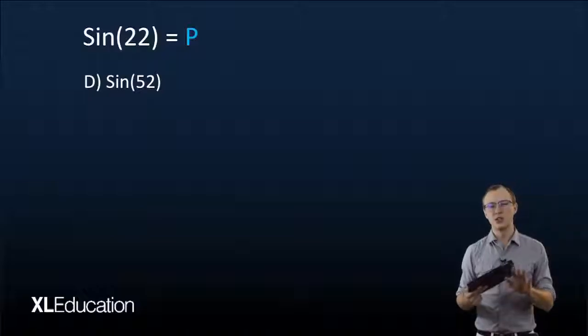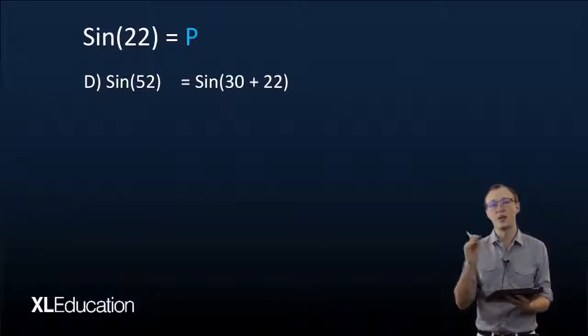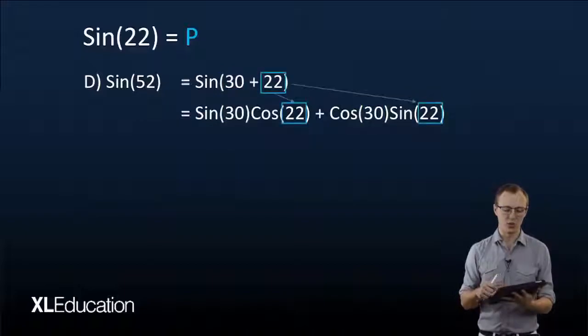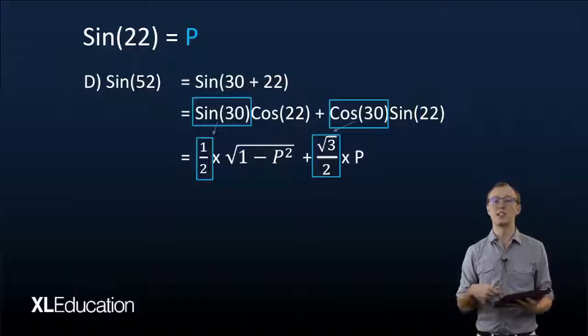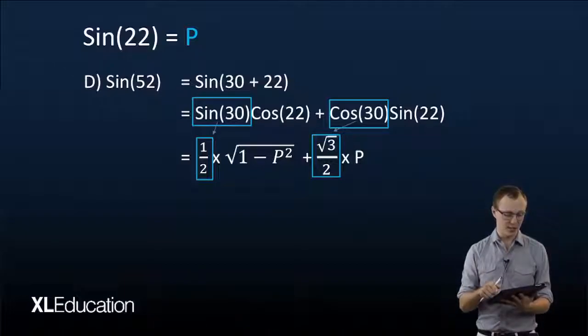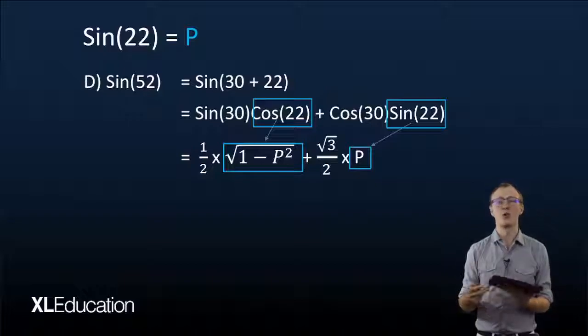For sine of 52°, this is a compound angle question — you have to play around with your special angles and the angle you've been given. Sine of 52° equals sine of (30° + 22°). Using the compound angle formula, that becomes sin(30°)·cos(22°) + cos(30°)·sin(22°). Sin(30°) and cos(30°) are special angles, so we can use those values directly. Cos(22°) we've already solved for, and sin(22°) was given as P, so we substitute in accordingly. And that's just how easy it is to answer trigonometric questions without the use of a calculator.